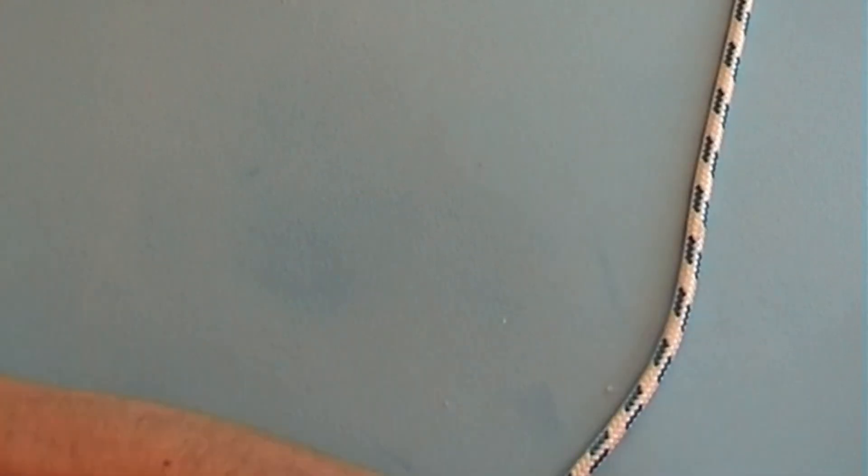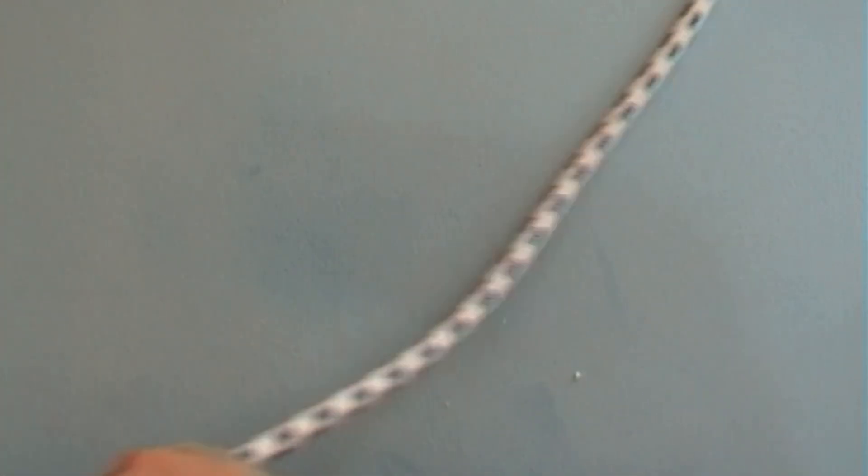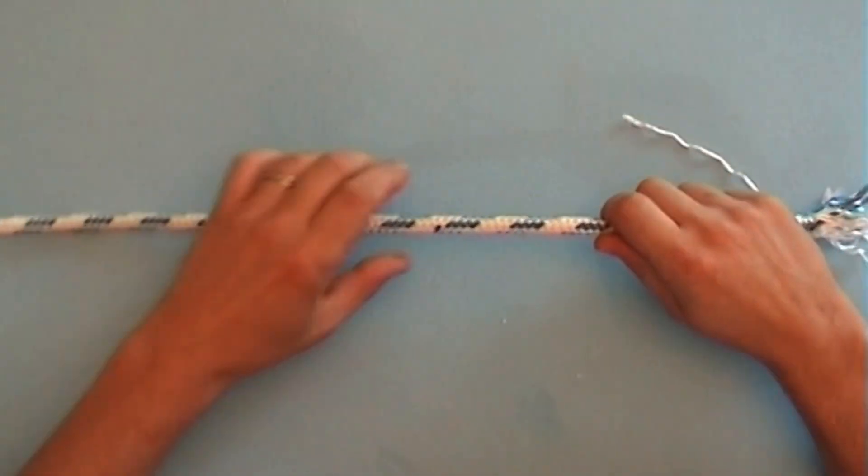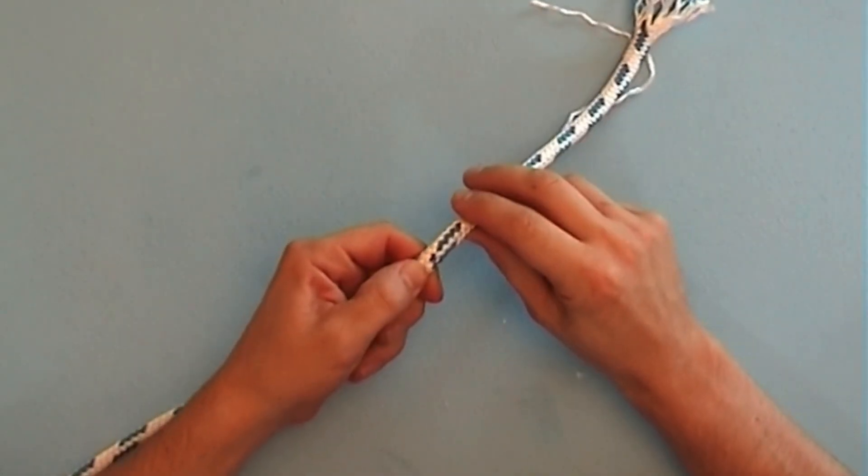Milk back all the slack, starting at the butterfly knot. Now bring the core out here at the mark.